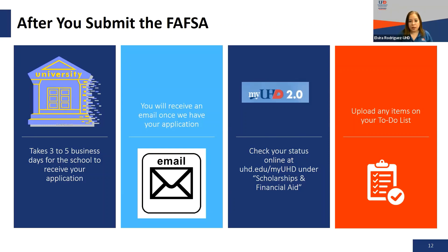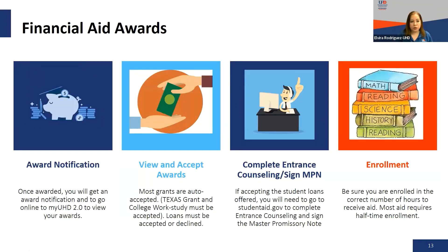Most documents we request can be uploaded by you at home. To upload requested items, go to the uhd.edu/myuhd portal, click on 'Scholarships and Financial Aid,' and view your to-do list — from there you can upload any items we are requesting. If there is a document you cannot upload, you can either email it to us or come in person to turn in those requested documents.